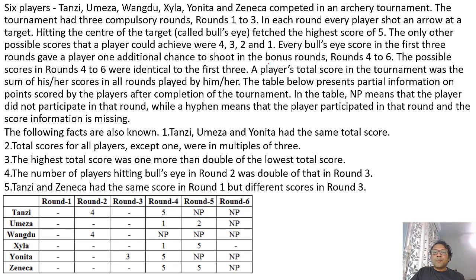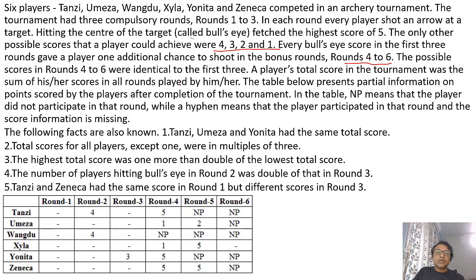Six players compete in an archery tournament. The tournament had three complete rounds: round 1, 2, and 3. In each round, every player shot an arrow at a target. Hitting the center fetched the highest points of 5. The only other possible scores were 4, 3, 2, 1. Every bullseye score in the first three rounds gave a player one additional chance to shoot in bonus rounds 4 to 6. The possible scores in rounds 4 to 6 were identical to the first three. A player's total score was the sum of scores in all rounds. The table below presents partial information of points scored. NP means the player did not participate in that round.